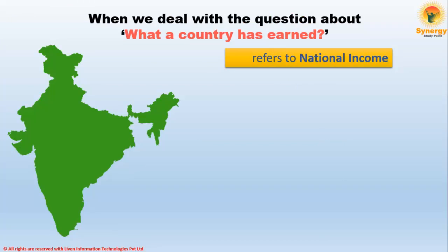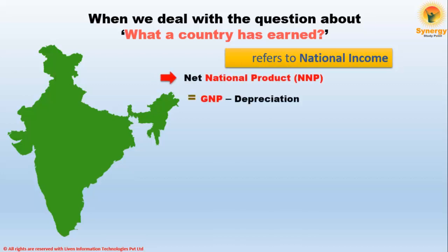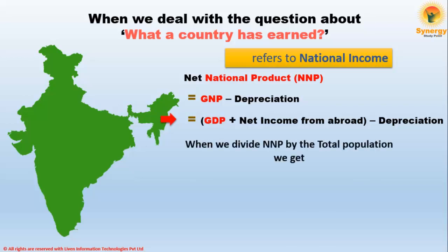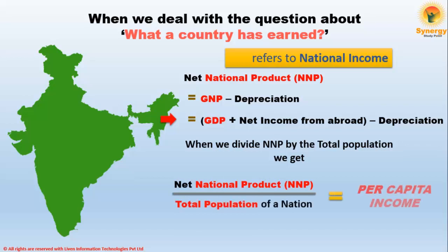When we deal with the question of what a country has earned, we are generally referring to national income, which is Net National Product (NNP), given by GNP minus depreciation, which equals GDP plus net income from abroad minus depreciation. It is important to note that national income can also be expressed in GDP or GNP, but to get a more realistic and correct picture of the economy, the majority of countries use NNP. When we divide NNP by the total population, we get the per capita income.